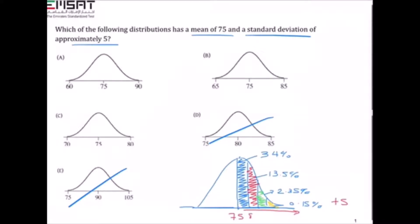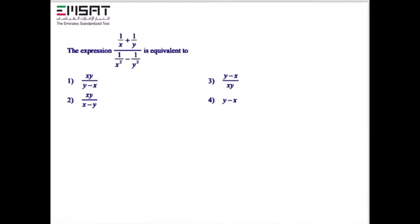So here it's going to be 80, then 85, and then 90. We end with 90, which is going to be option A. As you can see, the mean is 75 and it ends with 90.